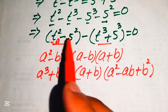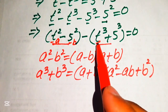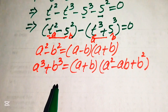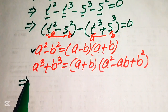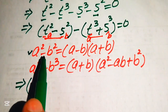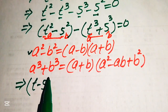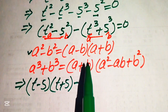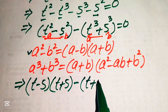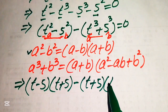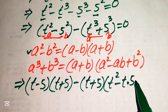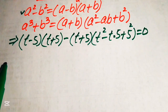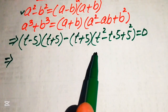In both factors, a is t and b is 5. Applying the difference of squares formula to the first factor gives (t minus 5)(t plus 5). Applying the sum of cubes formula to the second factor gives (t plus 5)(t squared minus 5t plus 25). So the equation becomes (t minus 5)(t plus 5) minus (t plus 5)(t squared minus 5t plus 25) equals 0.